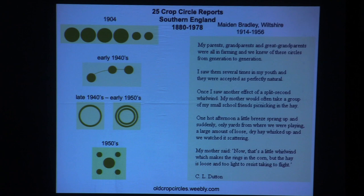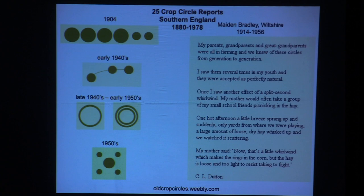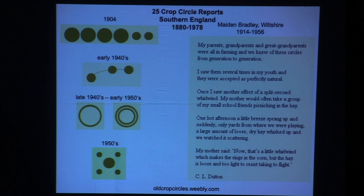Many people are not aware that these go way back. You might have heard about crop circles in the 80s, but how about 1880? One account from that time describes someone who saw them several times in their youth, accepted as perfectly natural. Once, a little breeze sprang up and a large amount of loose dry hay whisked up. His mother said that's a little whirlwind which makes the rings in the corn, but the hay is too light to resist taking flight. However, all those complex patterns made by whirlwinds? I don't think so.